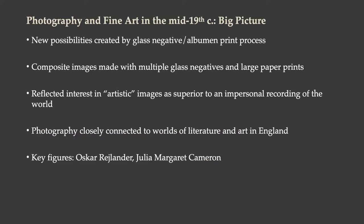Let's consider how photography was used as an art form in itself in the 1800s. A few things we'll notice: there are new possibilities created by the glass negative and albumin print process, and composite images are made with multiple glass negatives and large paper prints. Art photography reflected an interest in artistic images as superior to photography's use as an impersonal recording of the world. During this time, photography was closely connected to the world of literature and art in England. We'll look at two figures in particular, both working in England: Oscar Rylander and Julia Margaret Cameron.